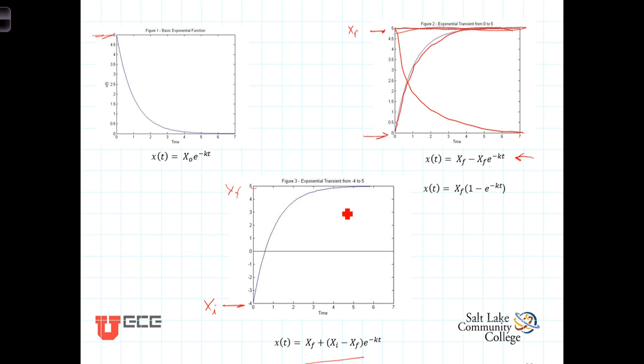Notice that initially at t equals zero we have x-final constant plus x-initial minus x-final, the x-finals cancel, and at t equals zero this function is simply the initial value.